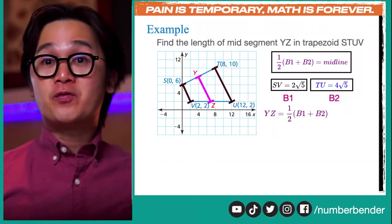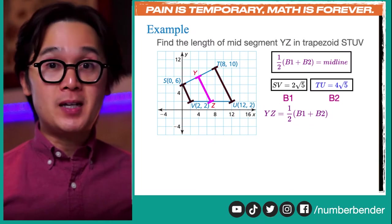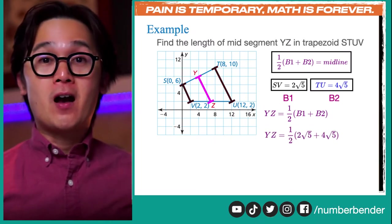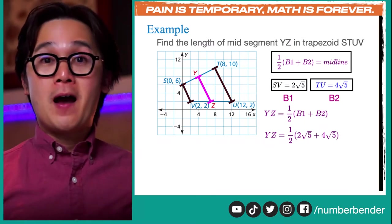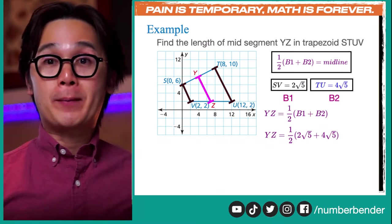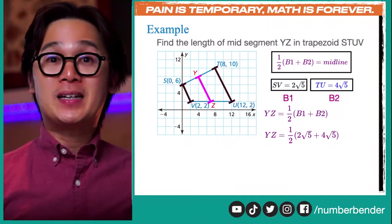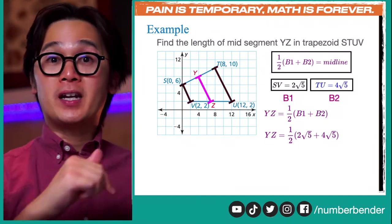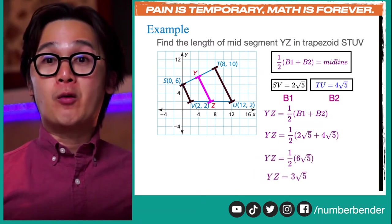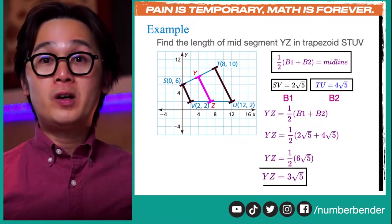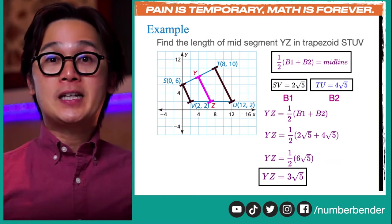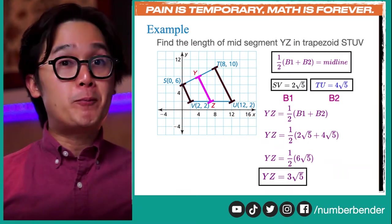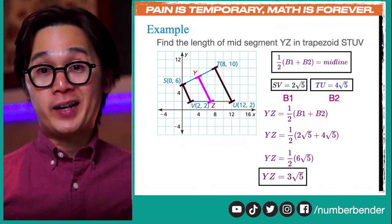We were able to find mid-segment YZ using the distance formula for two points on an XY plane and the mid-segment theorem. Now that we know YZ = 3√5, we've solved this geometry problem given a trapezoid represented by points on an XY plane.